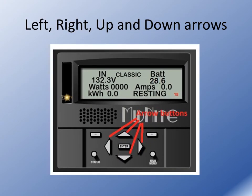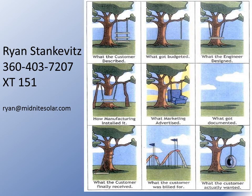Left, right, and up and down arrows are simply used to navigate through the menus when you see something highlighted. Use the left, right, up, or down arrows to move to the correct item you'd like to highlight, and then push enter to go to that menu. This has been Navigating the Classic Display. Until next time, this is Ryan Stankovitz of Midnight Solar.